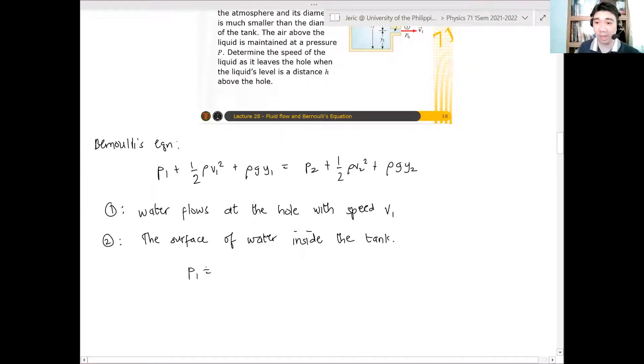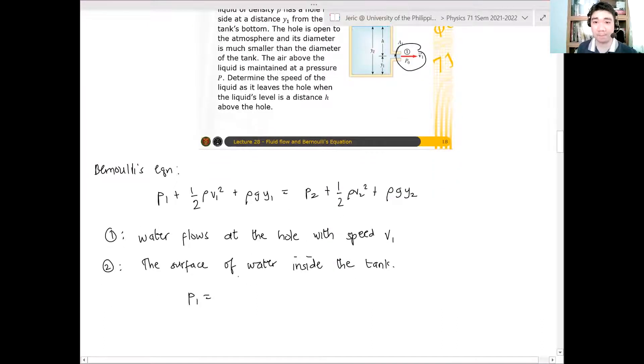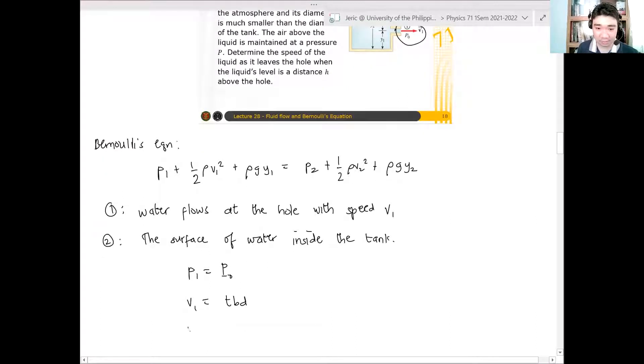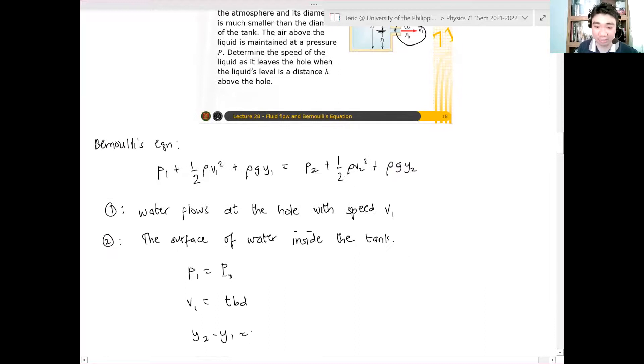Let's identify the variables. What's P1? The initial state is at the hole, not at the surface. So what's the initial pressure? That's P0, the atmospheric pressure. And then, what is V1? This is to be determined, TBD. That's what we need. And what about Y1? Instead of determining Y1, I'll just determine Y2 minus Y1 because I know that the height difference between the surface and the hole is given by H.